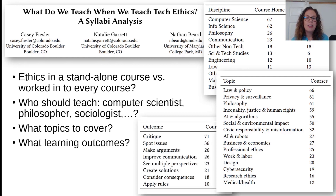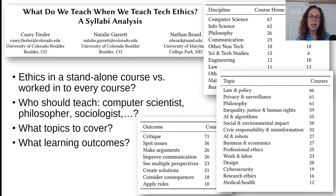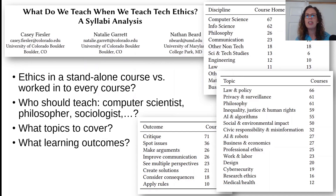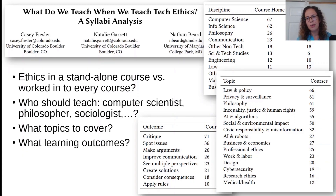On learning outcomes, there is a bit more agreement. The number one skill that tech ethics courses try to teach is critique, followed by spotting issues and making arguments. A lot of this is learning to spot what the issues are and how to critically evaluate a piece of technology or design proposal to see what could go wrong and what the risks are.